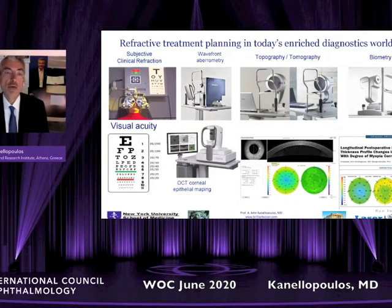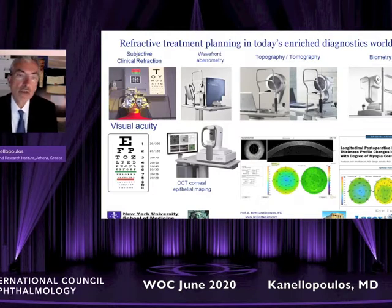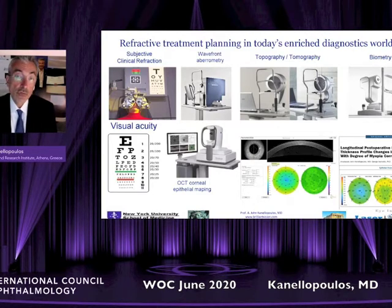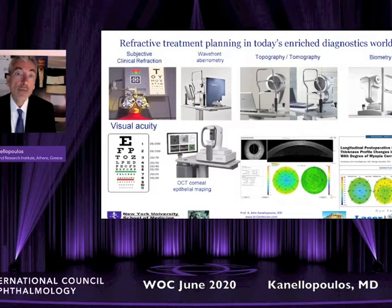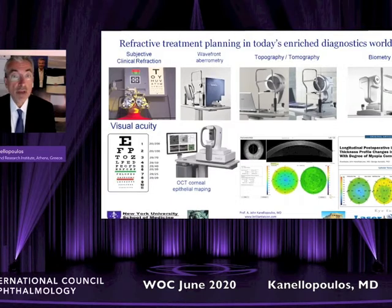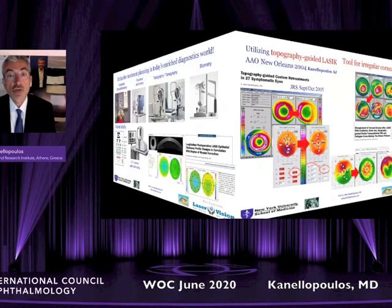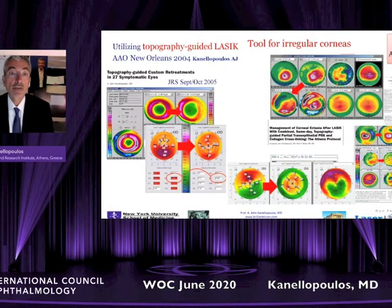We also have biometry that can help us through precise axial length measurements achieve better understanding and refractive corrections. And on the bottom, I'm also placing an anterior segment OCT device that can give us, through very accurate cornea thickness mapping and corneal epithelial mapping, an idea of how this may affect refraction and correcting refractive errors.